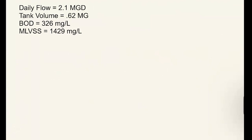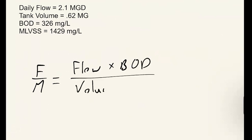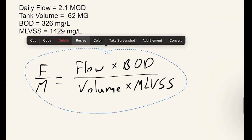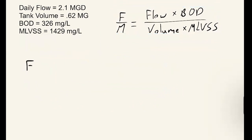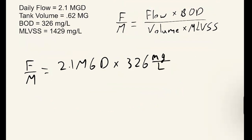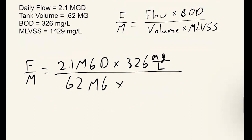Now we carry the MLVSS value of 1,429 mg/L forward and add it to our knowns. To calculate our F-to-M ratio, we plug into the formula: flow times BOD divided by volume times MLVSS. So we have 2.1 MGD times 326 milligrams per liter, divided by 0.62 million gallons times 1,429 milligrams per liter.